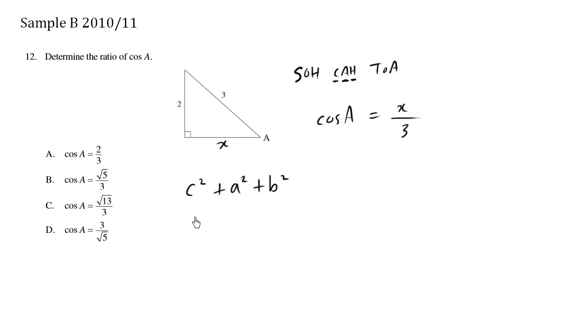So here we have c squared, 3 squared, equals 2 squared plus, and we can call b x, x squared.